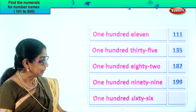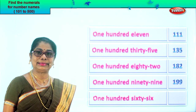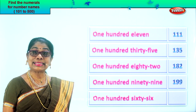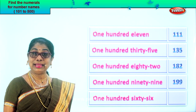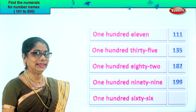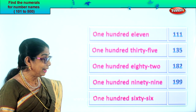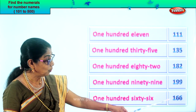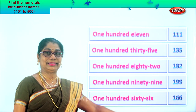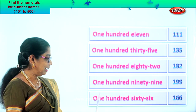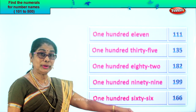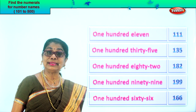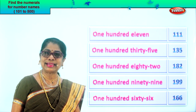Let's take the last one: one hundred sixty-six. One in the hundredth place, sixty-six — six in the tens place, six in the ones place. So one hundred sixty-six. Reading the number name and the numeral should be the same. Very good. Did you enjoy the exercise?